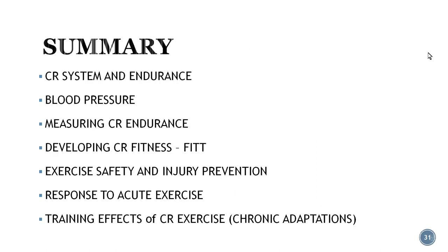In summary, this chapter covered the physiology of the cardiorespiratory system, blood pressure, what endurance is, how to develop it, safety concerns, and injury prevention. Most importantly, understand the differences between acute exercise responses — your body's immediate reactions to exercise — and the chronic training effects or adaptations that develop over time. That's all for this chapter. I hope you enjoyed it and I'll be looking for your questions next week on Monday. Have a great day.